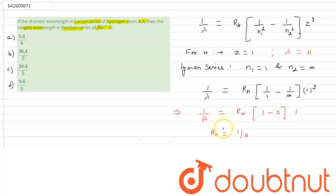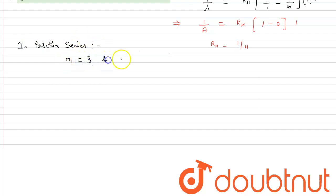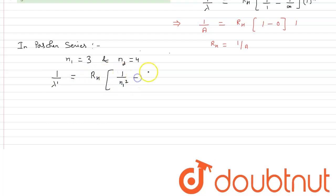Now the next part asks for the longest wavelength in the Paschen series. In the Paschen series, N1 becomes 3 and N2 becomes 4, because we have to calculate the longest wavelength. So 1 by lambda-dash equals R_H times (1/N1² minus 1/N2²) times Z². For helium-plus, the value of Z becomes 2, so Z² equals 4.